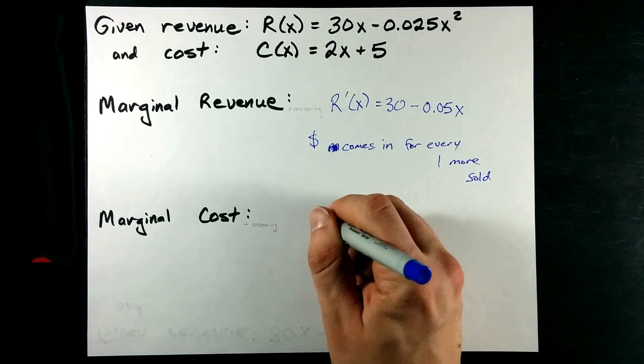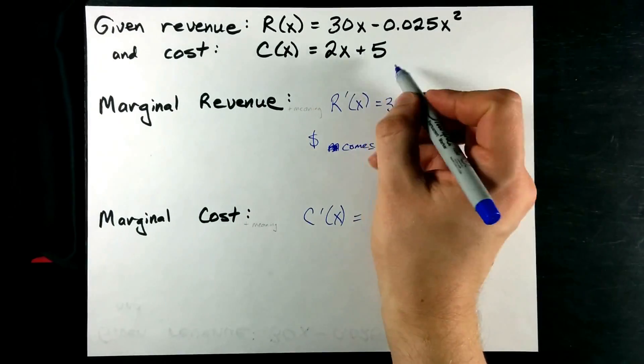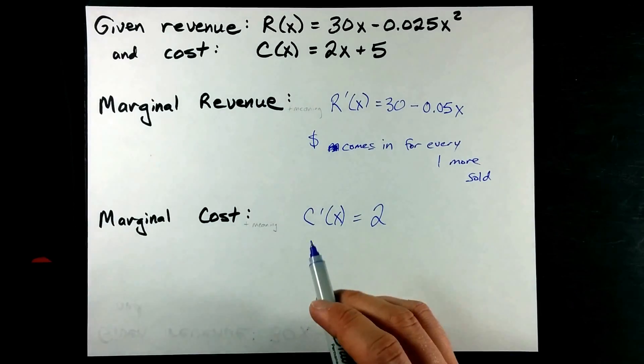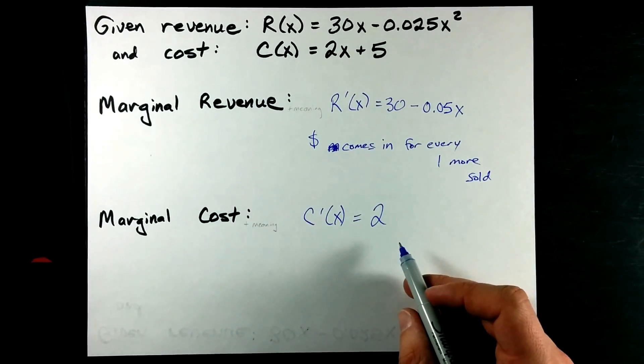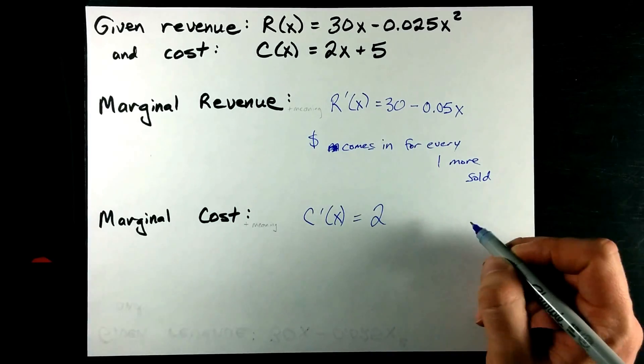What's marginal cost? Well, that shouldn't be a surprise. It's the derivative of cost. The derivative of the cost function here is simply 2, which means for every 1 more that I sell, my cost increases by $2, right?